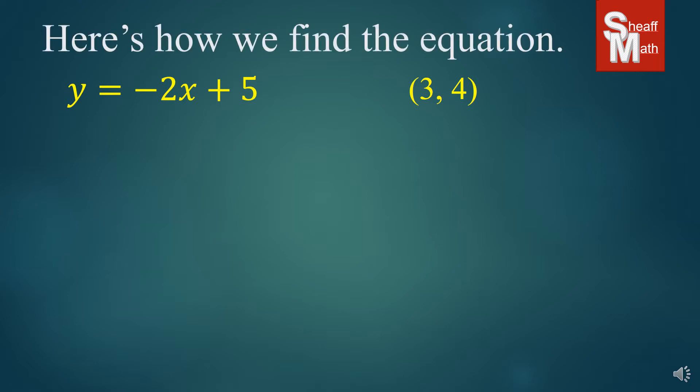Here's how we find the equation. The first thing that we identify is our slope. A slope of a parallel line is always the same. So since our slope is negative 2 in our first equation, our slope of the parallel line will be negative 2 as well. We're going to use the generic form again of the slope intercept, y equals mx plus b. m is the slope and b is the y intercept. Once we find those two, we will have an equation.